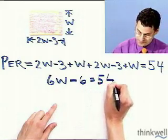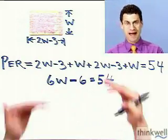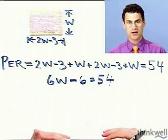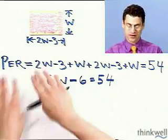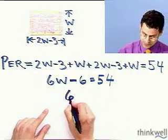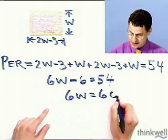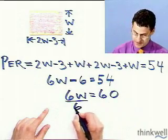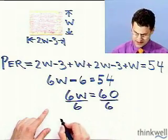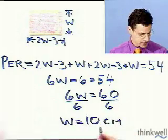So I have 6w minus 6 equals 54. This is now a really easy equation. The math is always the easy part; the hard part is going from the words to the mathematics. I add 6 to both sides, so 6w equals 60. If I divide both sides by 6, I see that w equals 10, and the units are centimeters.